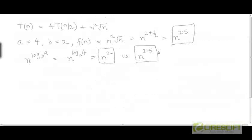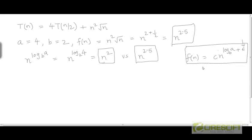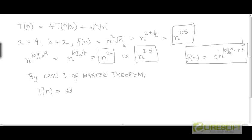Since f has the clean form n^2.5, and we proved earlier when discussing Case 3 that for such clean forms — where f equals some constant times n^(log_b a + ε) for some ε > 0 — we don't need to check the regularity condition, because the common ratio will be less than 1. So we can directly say by Case 3 of the Master Theorem that T(n) = Θ(f) = Θ(n^2.5).